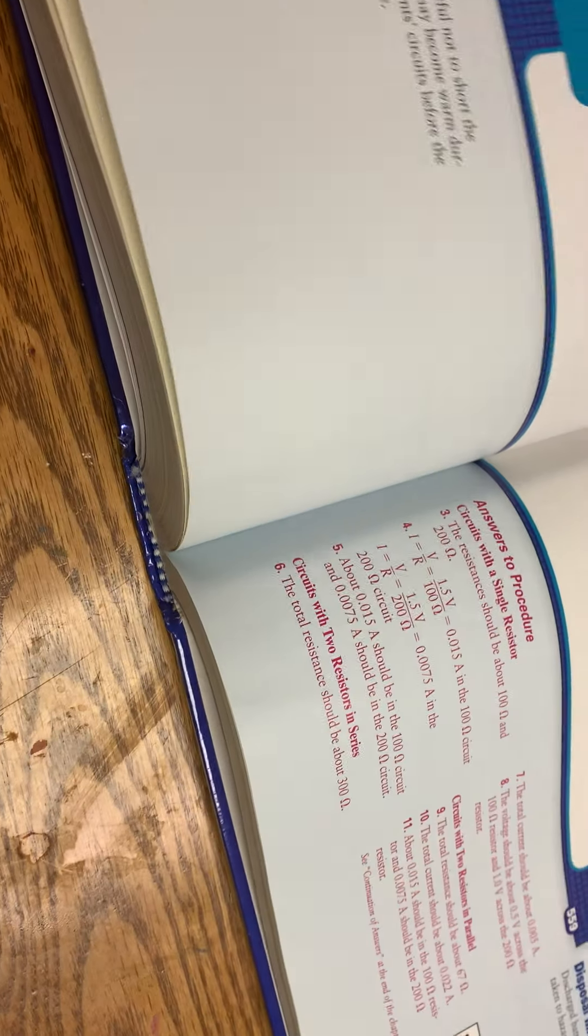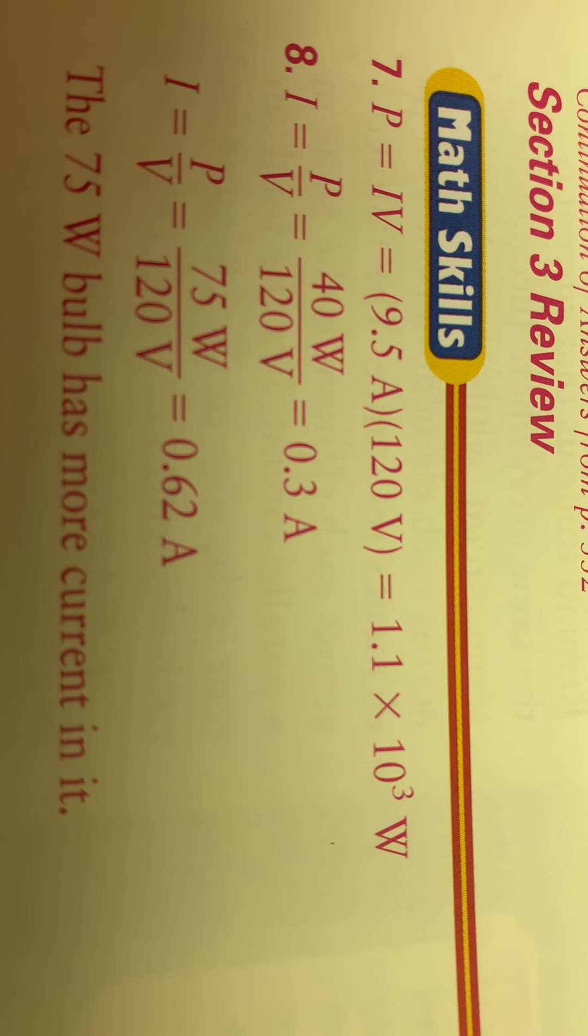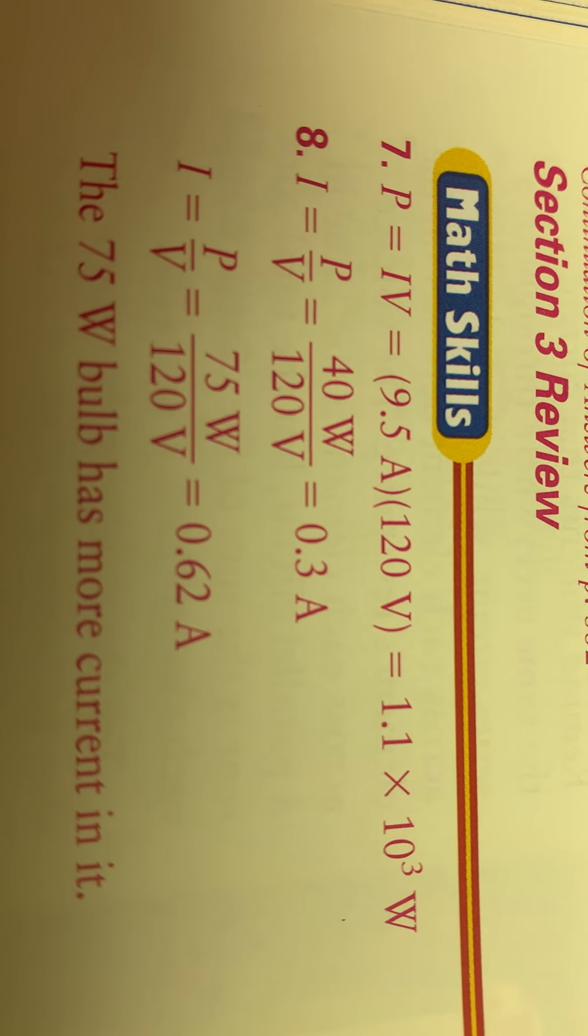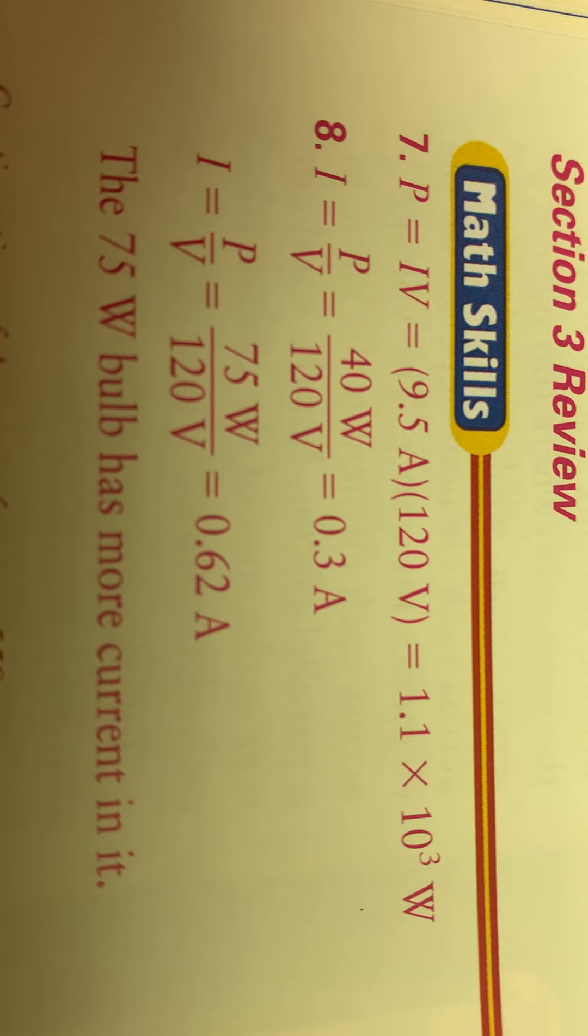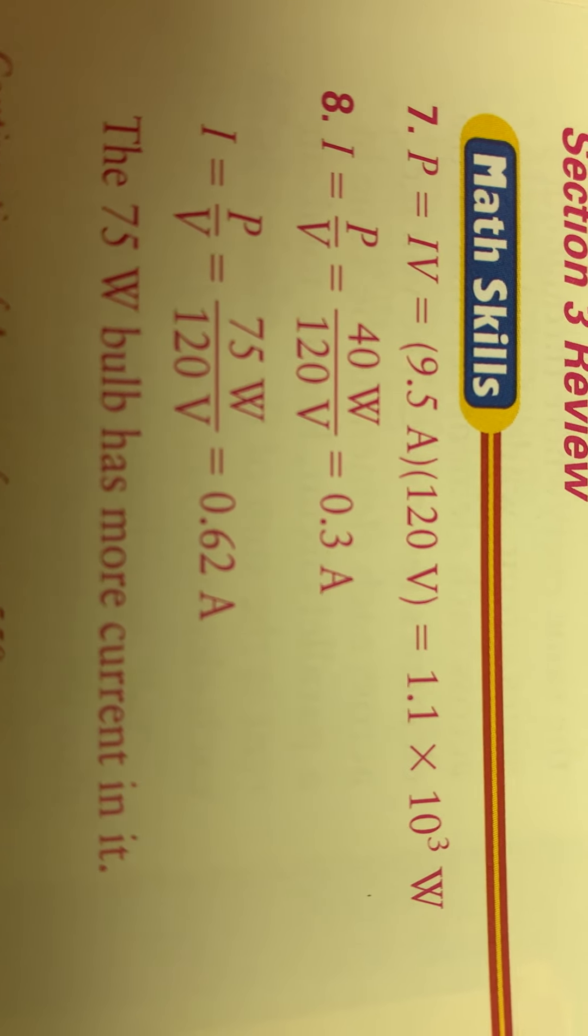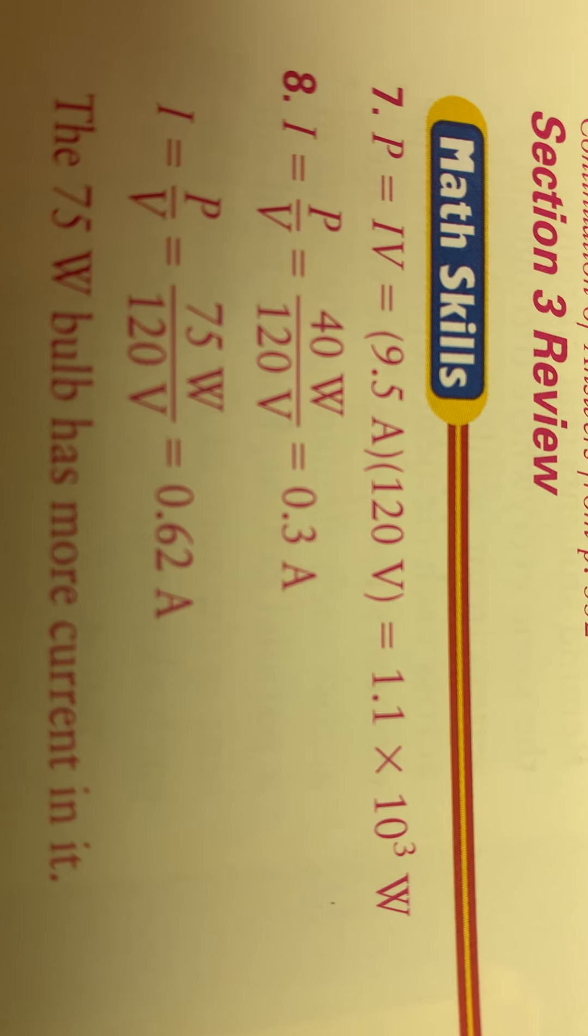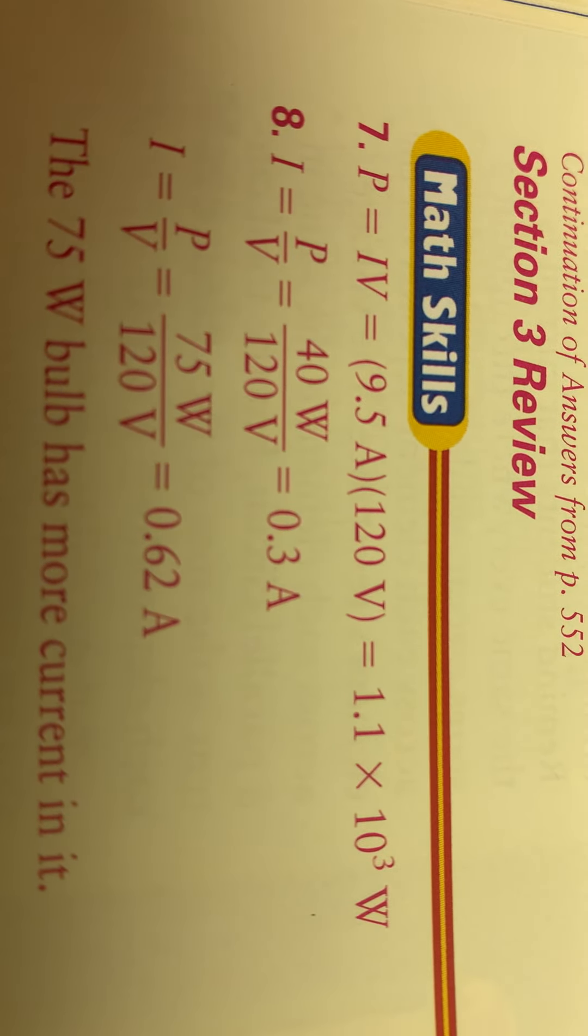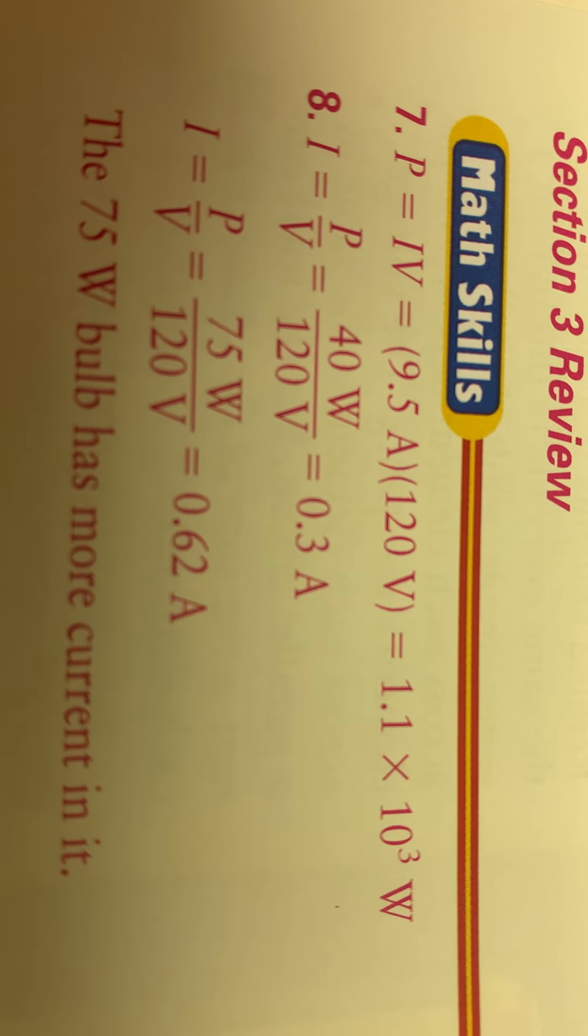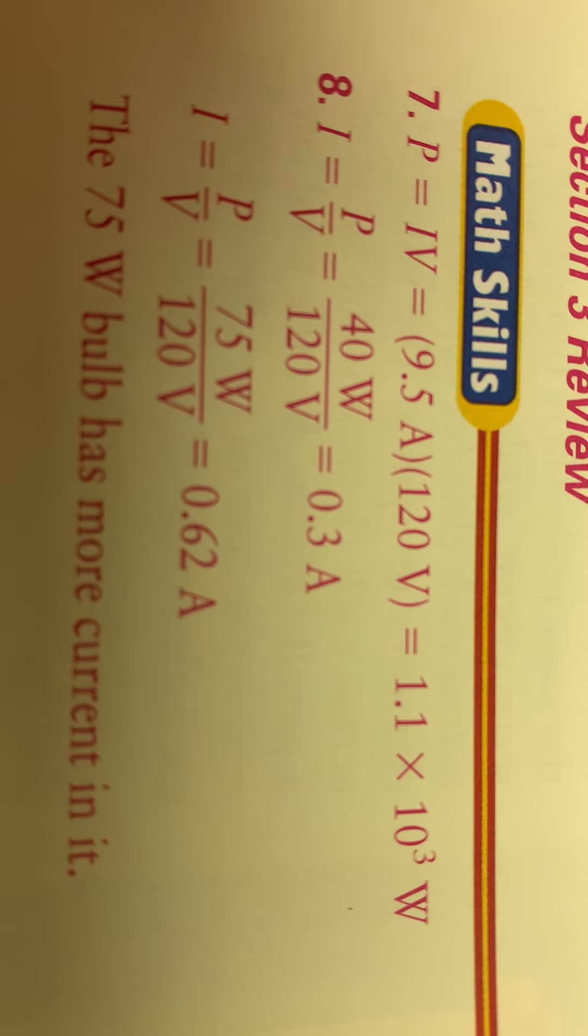And for number seven and eight, those were math problems, we'll get you the answers back here real quick. I'll just show them to you quick, seven and eight right there they are. Three amps, 1100 watts, 0.3 amps, and 0.62 amps, so the 75 watt bulb would have more current. And of course hardly nobody's using 75 watt bulbs anymore since we're almost all going to LEDs. Again, if you have questions let me know, get those assignments in, try to get all the points you can, guys. Okay, you.